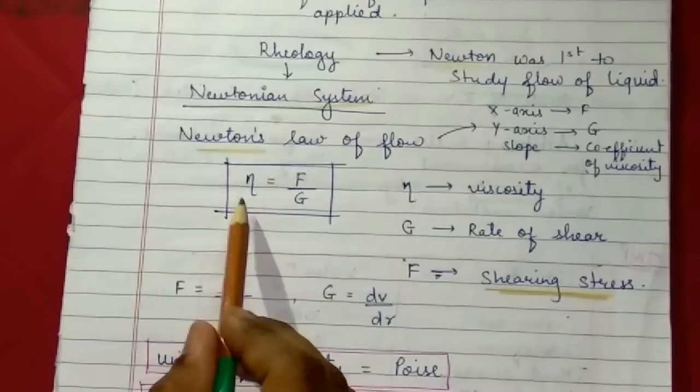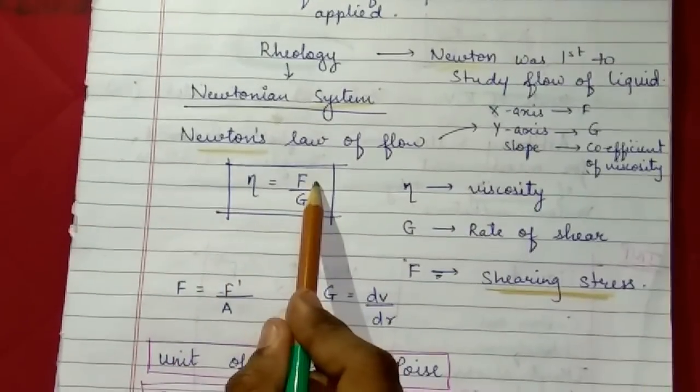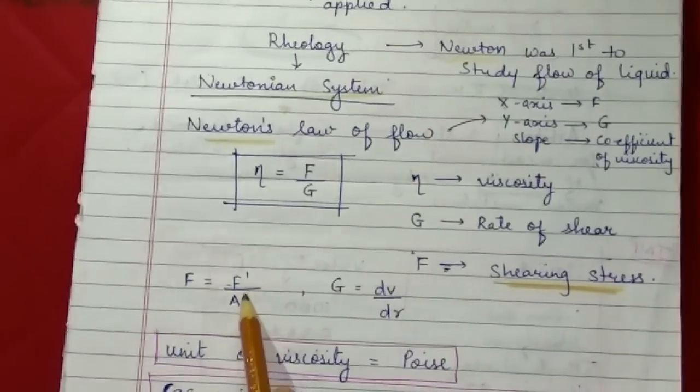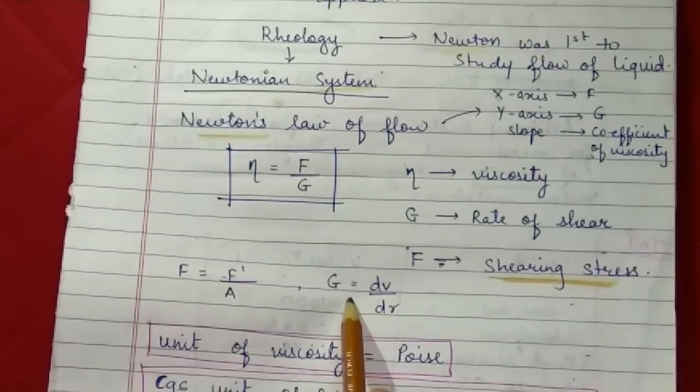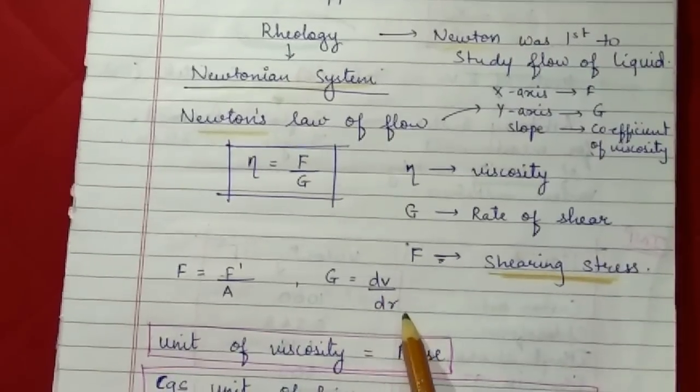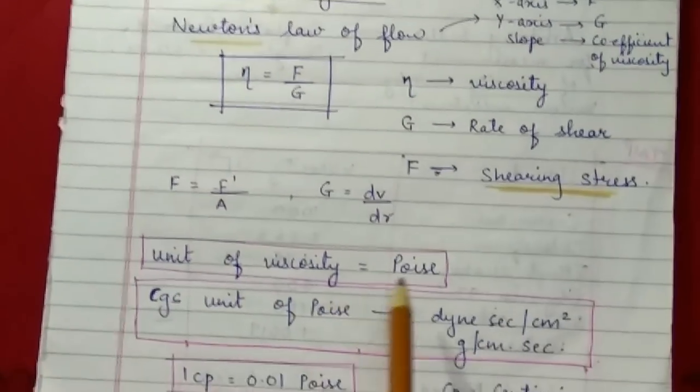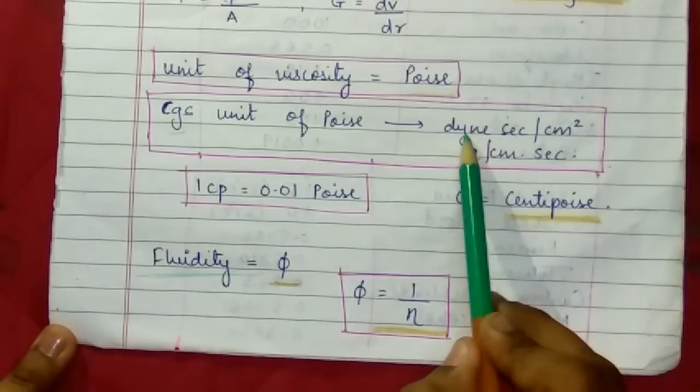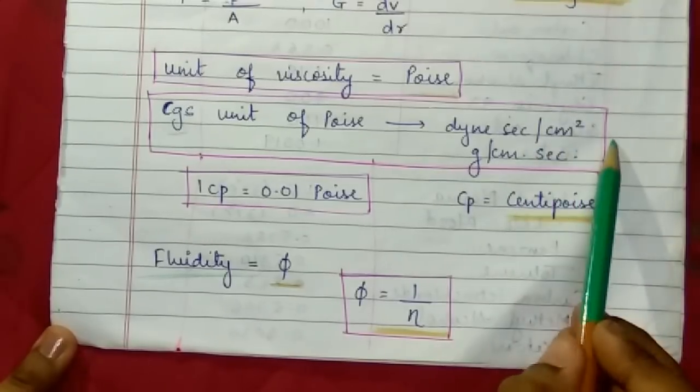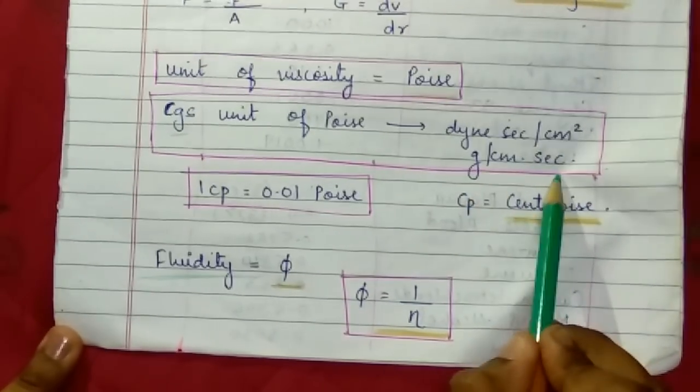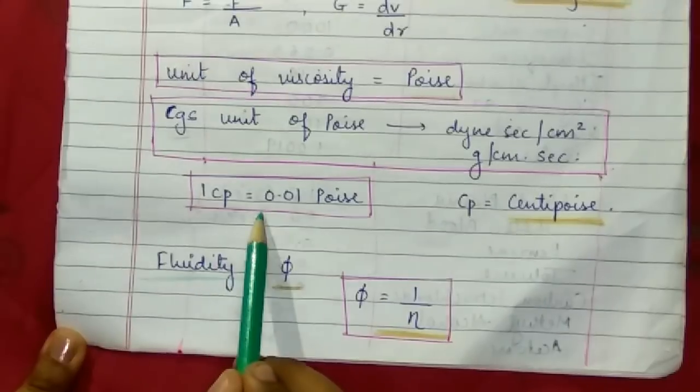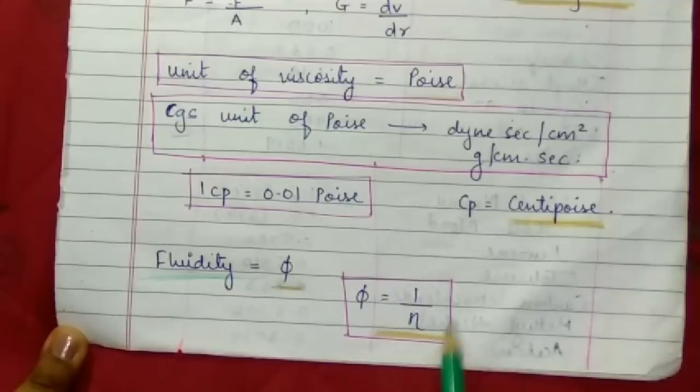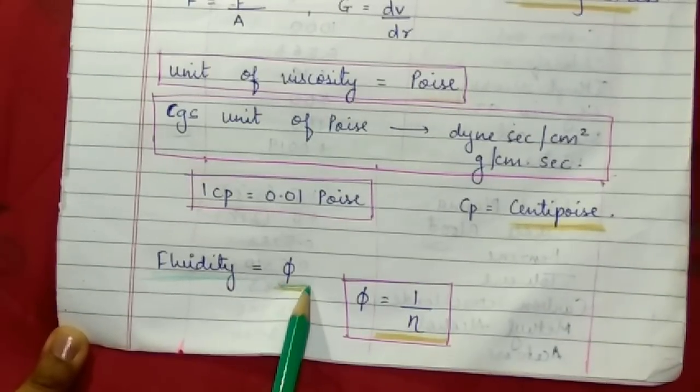Newton's law states that viscosity equals shearing stress upon rate of shear. Shearing stress can be calculated as f upon a, and rate of shear as dv upon dr. The unit of viscosity is poise. CGS unit of poise is gram second per centimeter square or gram per centimeter second. One centipoise equals 0.01 poise. Fluidity is inverse of viscosity, determined as symbol phi.